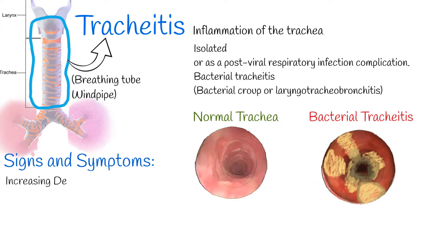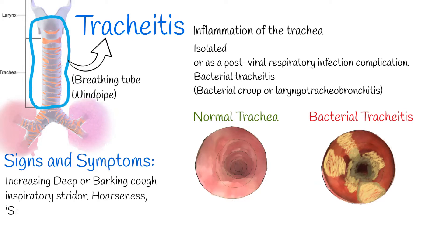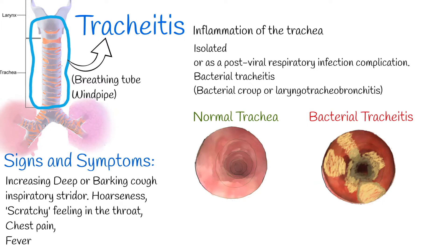Signs and symptoms include: increasing deep or barking croup cough following a recent upper respiratory infection, crowing sound when inhaling (inspiratory stridor), hoarseness, cough, and tachypnea, scratchy feeling in the throat, chest pain, and fever.